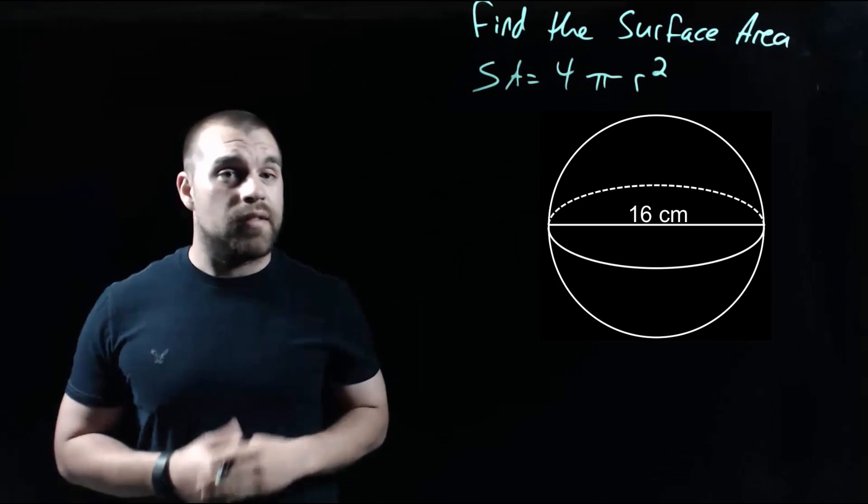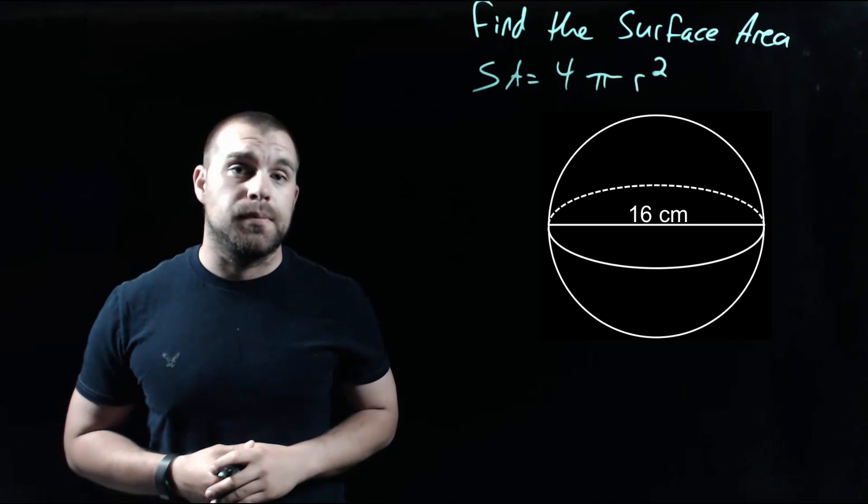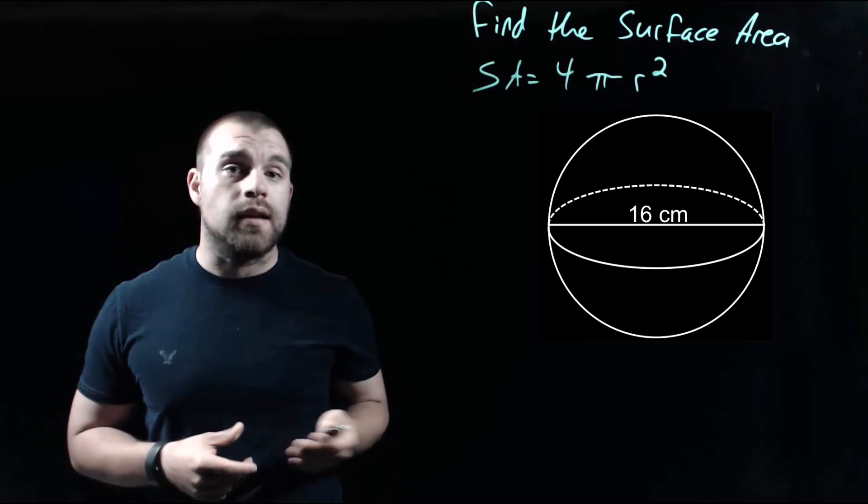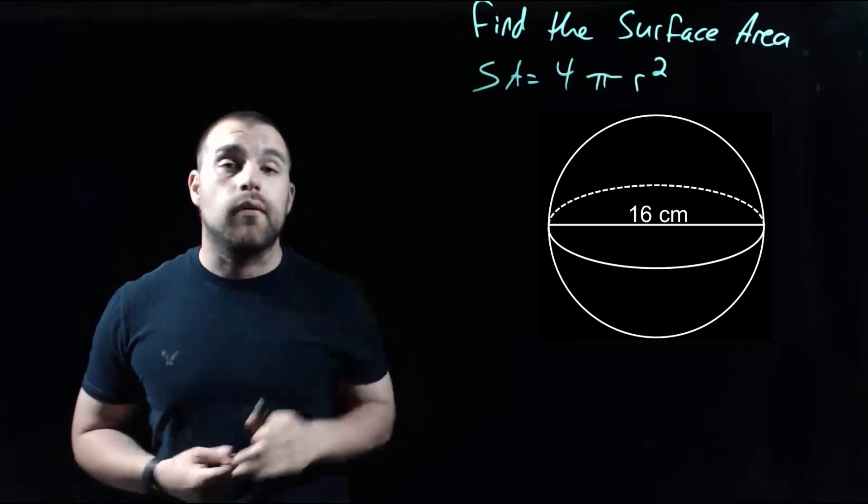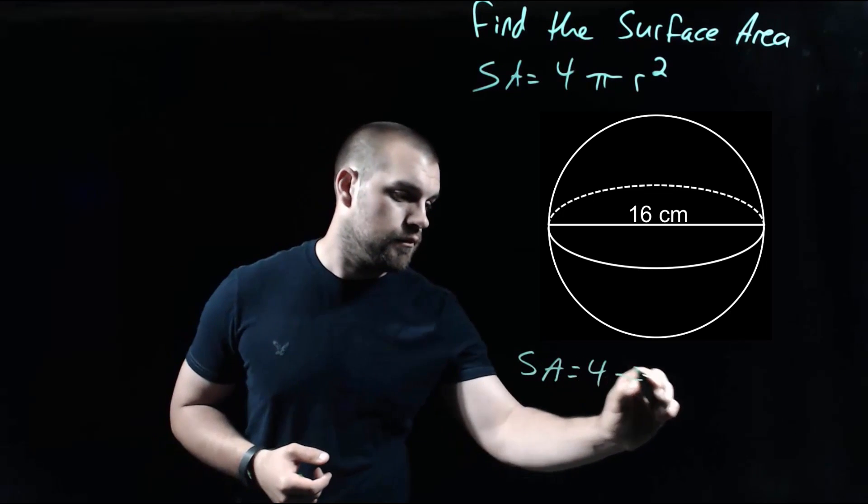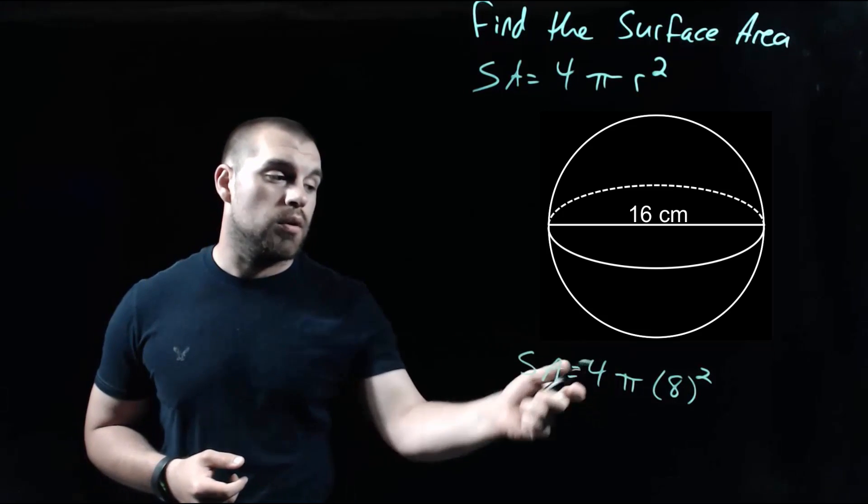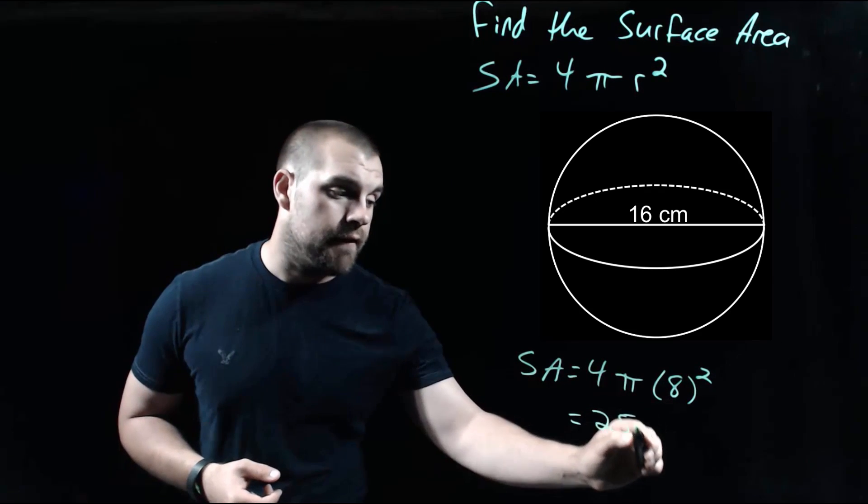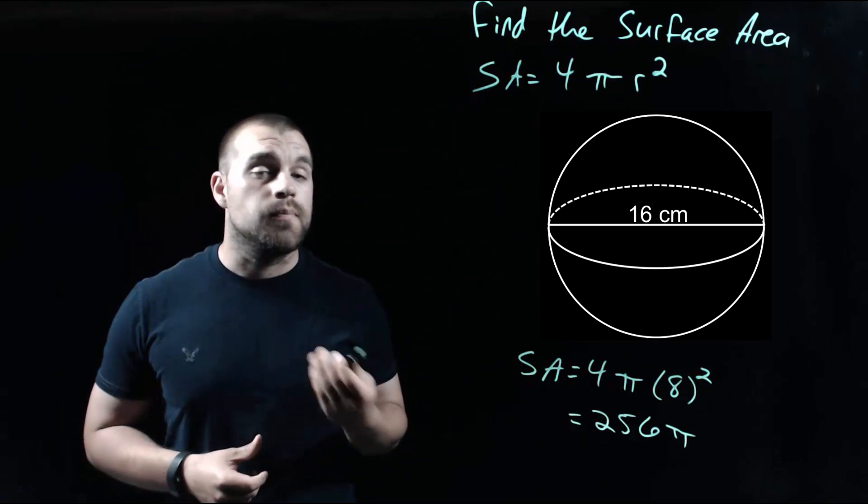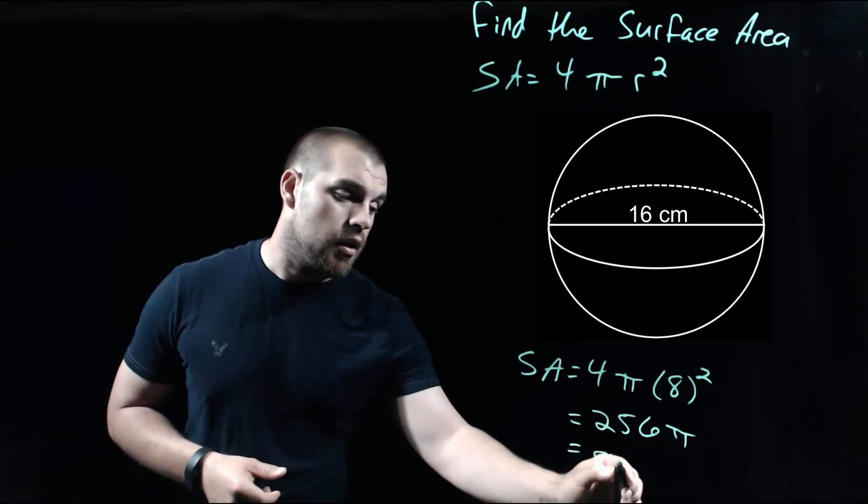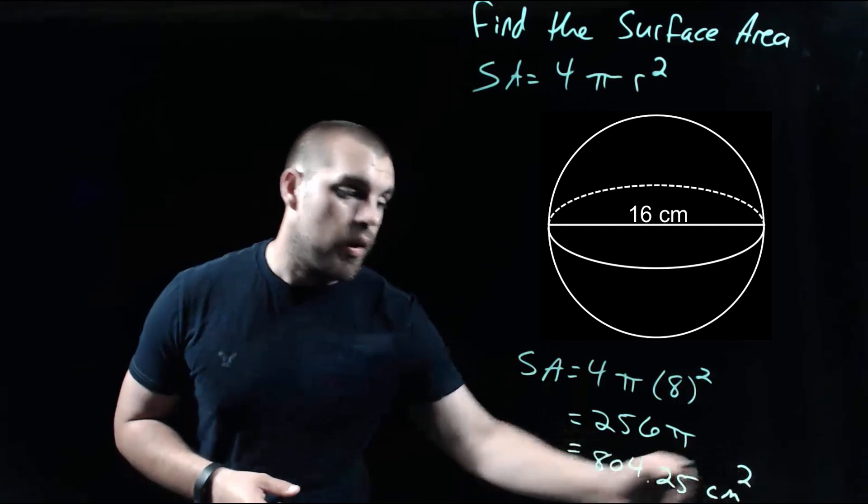Taking a look at our next example, this time we're given the diameter of our sphere. To find the radius, we take that diameter and split it in half. So we take that 16 centimeter length and split it in half, giving us a radius of 8 centimeters. Using our surface area formula, 8² is 64, and 64 × 4 is 256π. Typing that into our calculator, going to two decimal places, we get 804.25 centimeters squared.